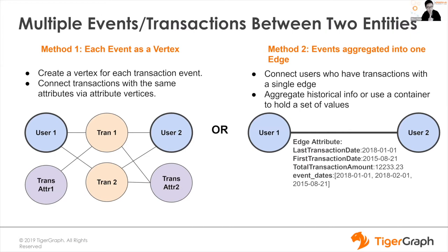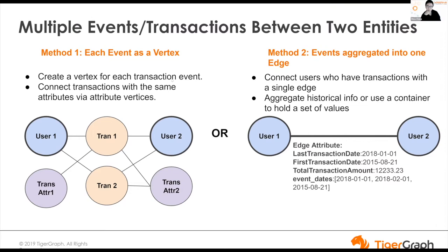Another frequently asked question for schema design: how do we handle multiple relationships of the same type between two vertices? This is limited by a TigerGraph feature — between two vertices, for the same edge type, you can only have one edge. That means if you have multiple transactions between two users, we can either define multiple transaction vertices (method one) or aggregate all the information into one edge (method two).